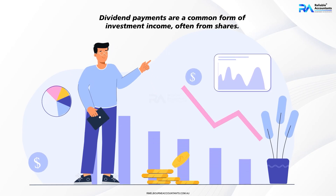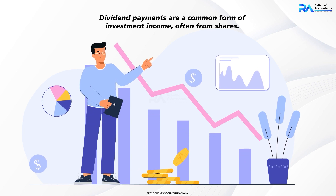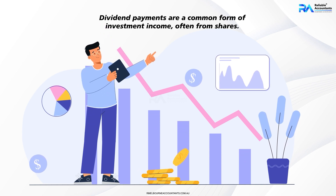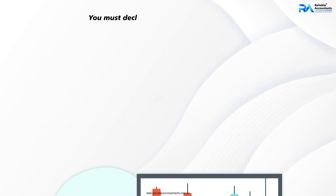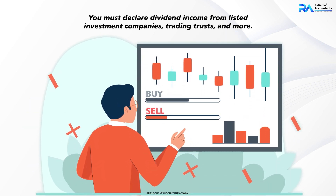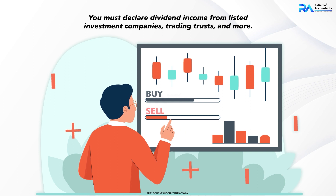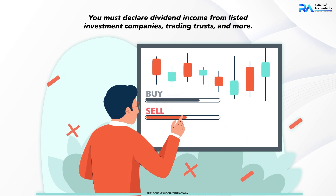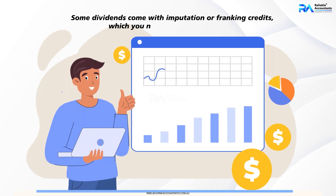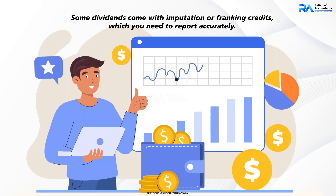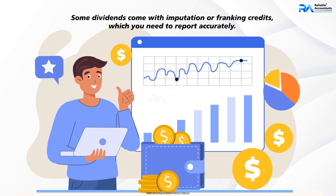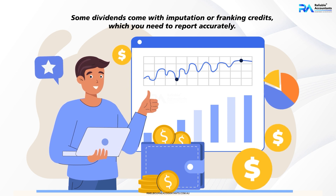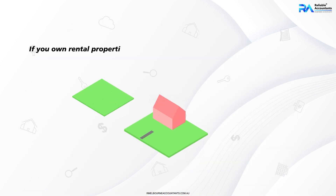Dividend payments are a common form of investment income, often from shares. You must declare dividend income from listed investment companies, trading trusts, and more. Some dividends come with imputation or franking credits, which you need to report accurately.